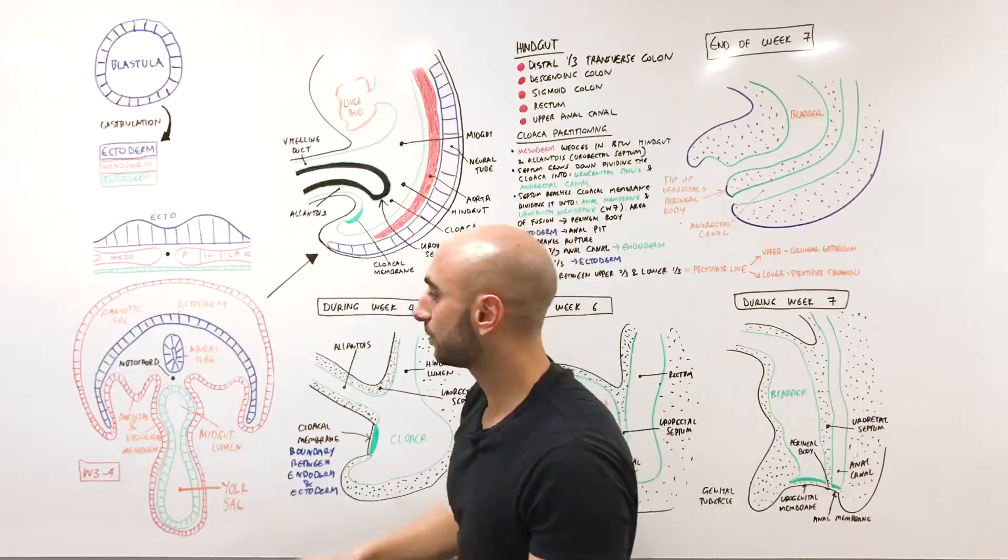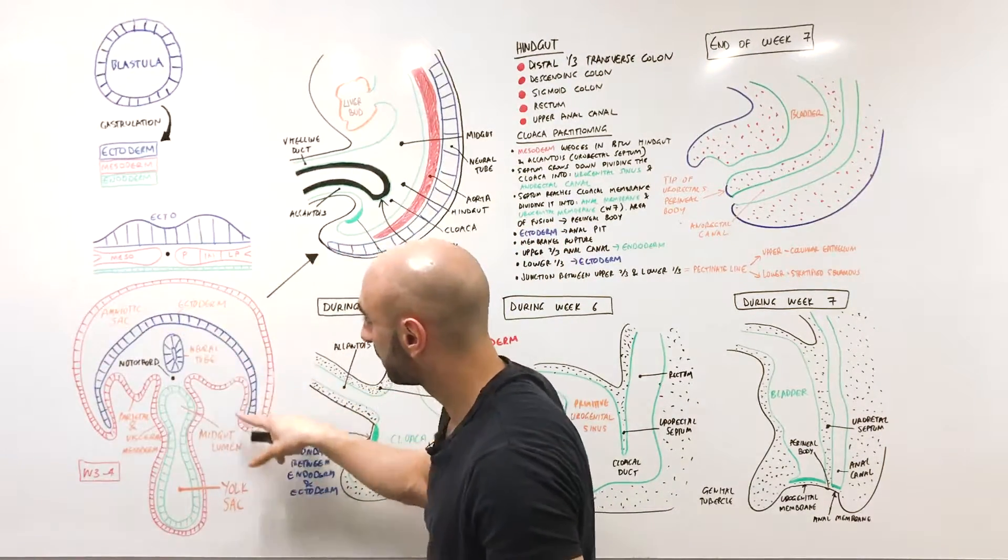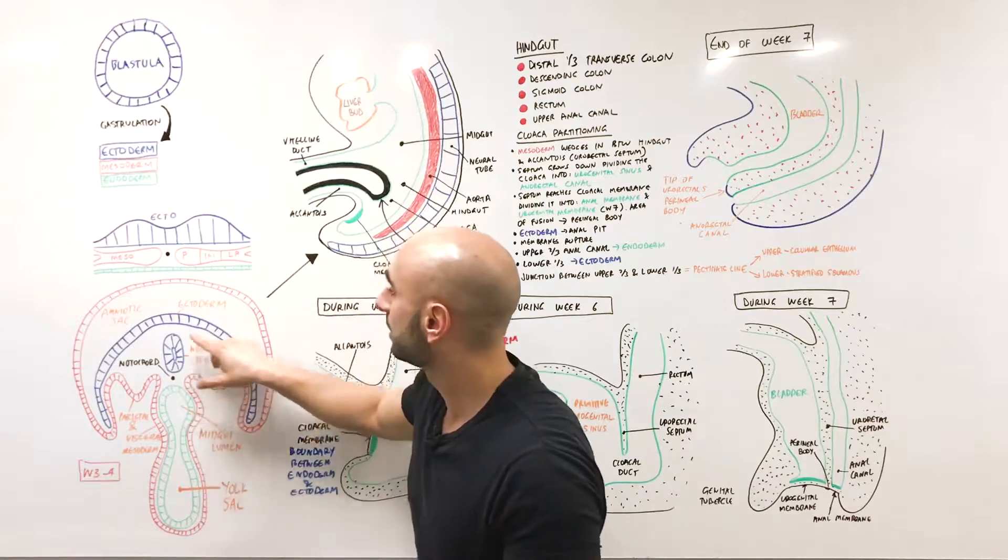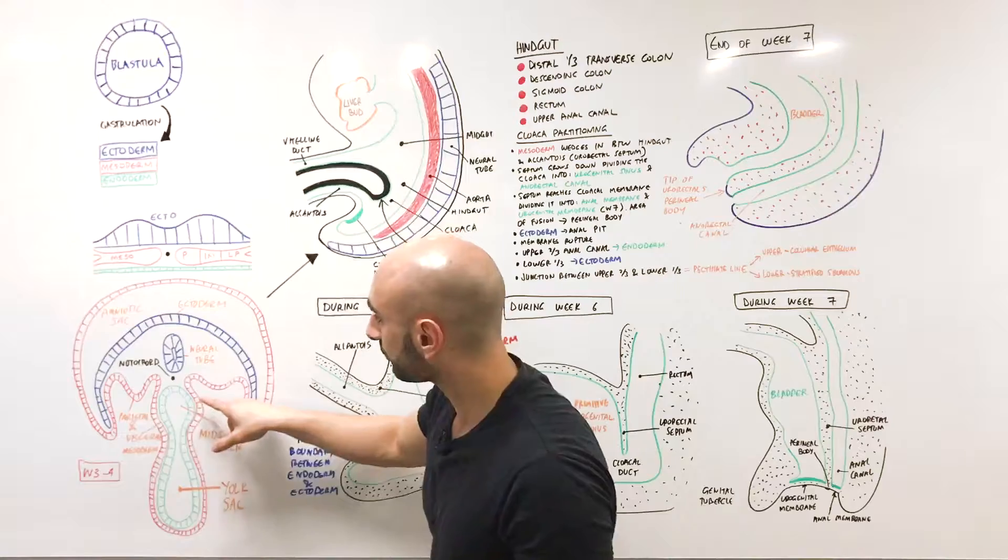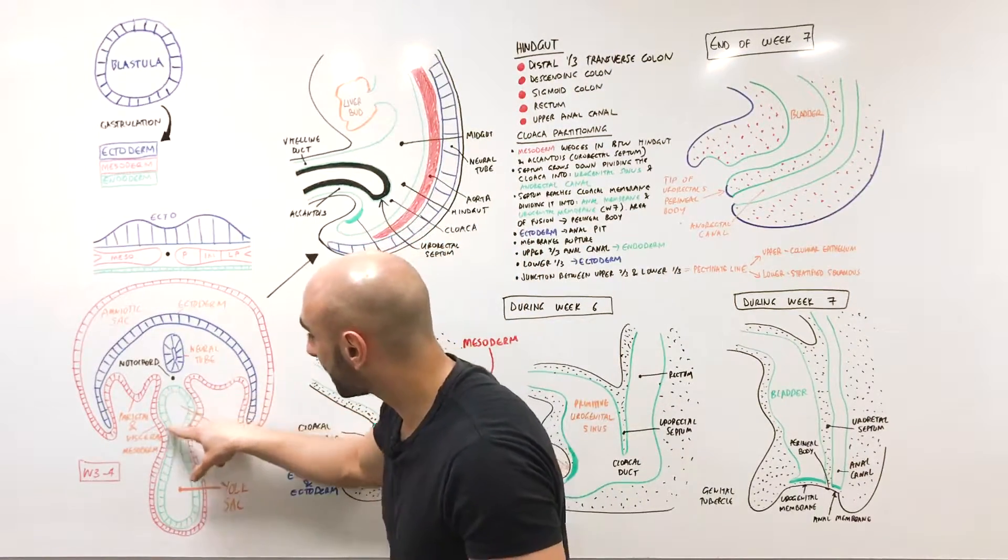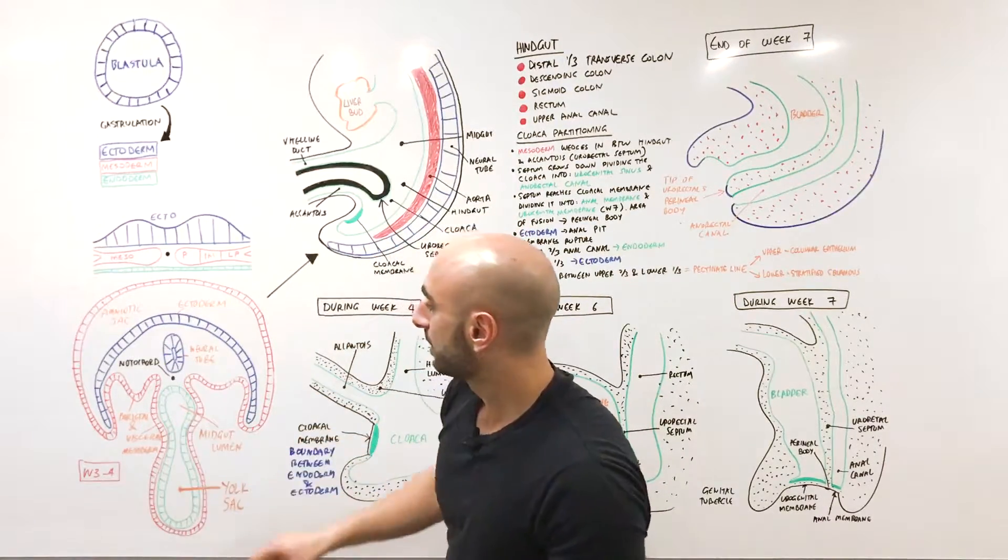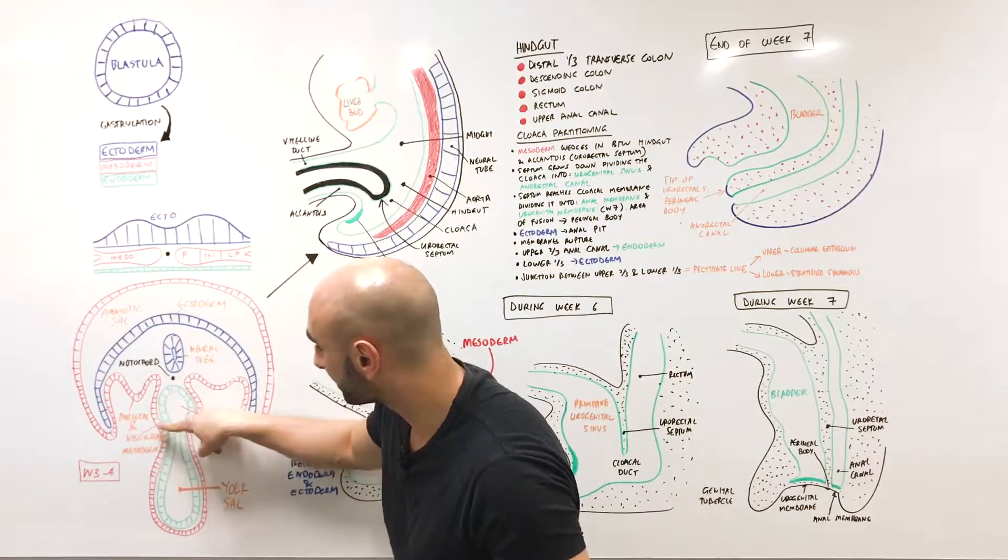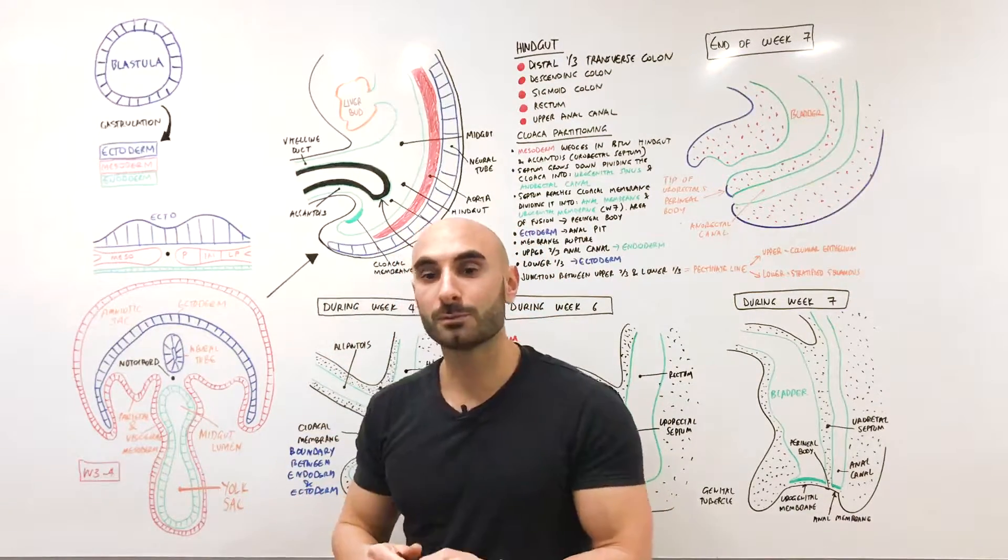These are color coded so that we can see that the ectoderm or future skin is here, and this is your CNS. We've seen that the neural tube has actually pinched off the ectoderm and formed its own tube inside the embryo. At the same time, we have the GIT or gut tube being formed from the endoderm. We've mentioned already how we have parietal mesoderm here and visceral mesoderm covering the GIT—future parietal and visceral peritoneum.